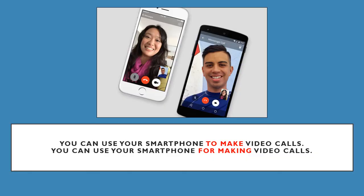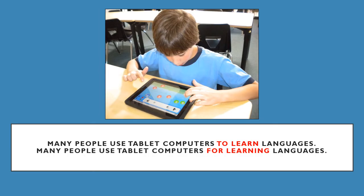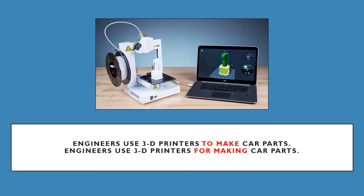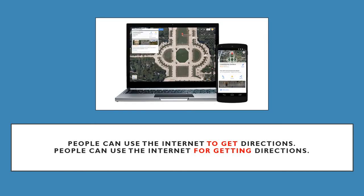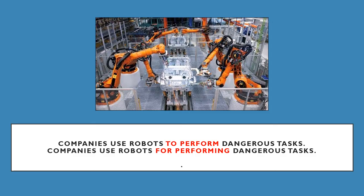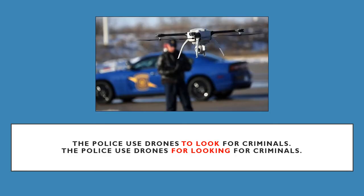We will see some more examples using infinitives and gerunds for uses and purposes. You can use your smartphone to make video calls. You can use your smartphone for making video calls. Many people use tablet computers to learn languages. Many people use tablet computers for learning languages. Engineers use 3D printers to make car parts. Engineers use 3D printers for making car parts. People can use the internet to get directions. People can use the internet for getting directions. Companies use robots to perform dangerous tasks. Companies use robots for performing dangerous tasks. The police use drones to look for criminals. The police use drones for looking for criminals.